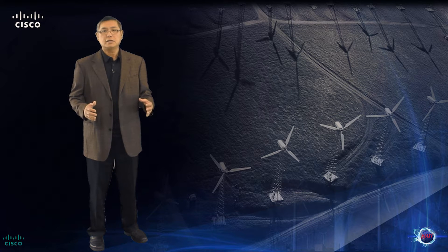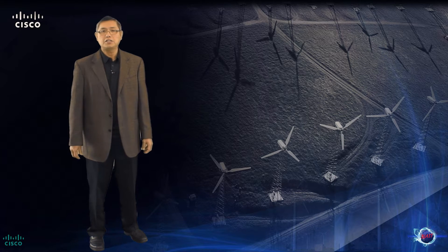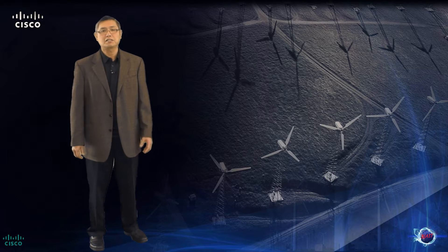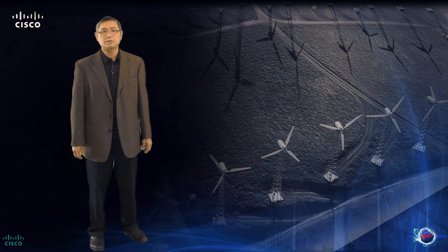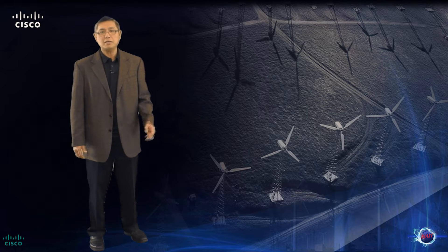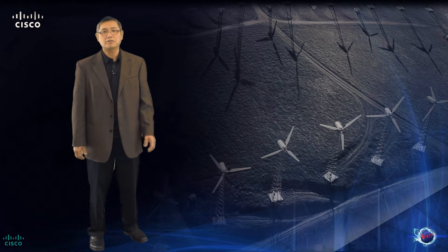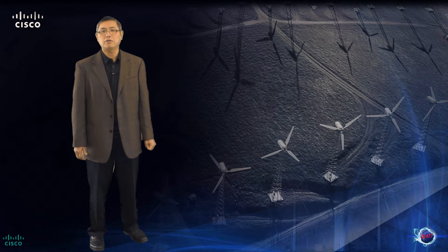Electrical utilities are the major provider of energy in most countries. Because of this, it is critical that utilities maintain high levels of availability and security for their customers. Their customers include individual consumers as well as other utilities. In many cases, if service level agreements are not met, utilities can incur millions of dollars in fines. In order to maintain such levels of availability, protection and control is critical for the utilities.